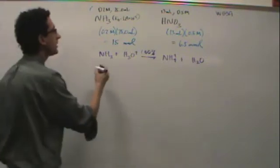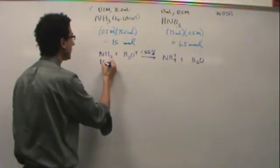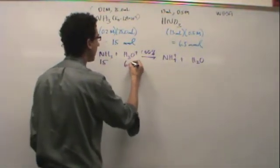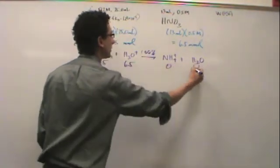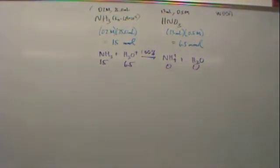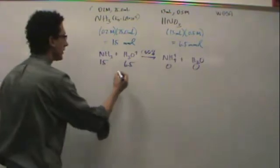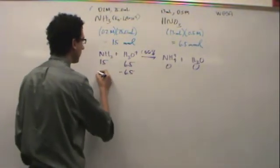Then you write the amounts in that you started with, so it was 15 and 6.5, 0, 0. And then you're going to lose the limiting reactant. So that's the minus 6.5, the lesser one.